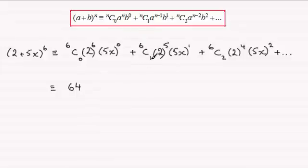When it comes to 6C1, anything C1 is always the value that you've got here, n. So in this example it's going to be 6. 2 to the power 5 is 32, and then you're going to multiply it with 5x. So you've got 6 times 32 times the 5 there, that's going to give you 960. So your second term is 960x.